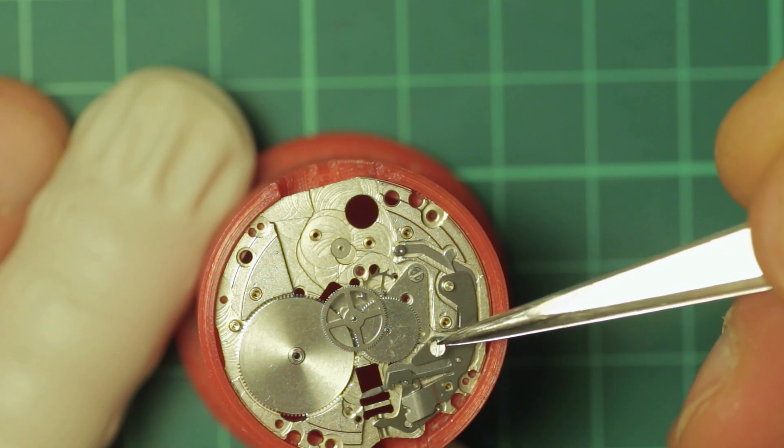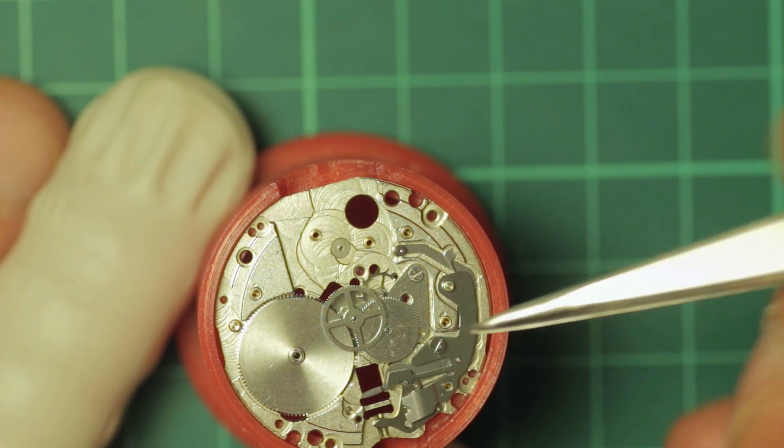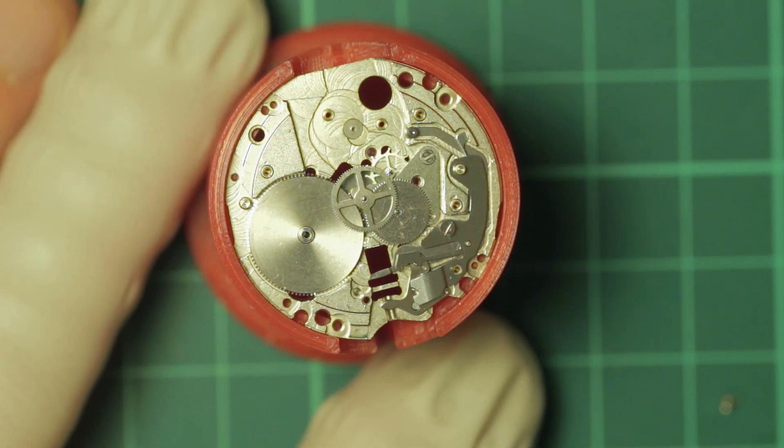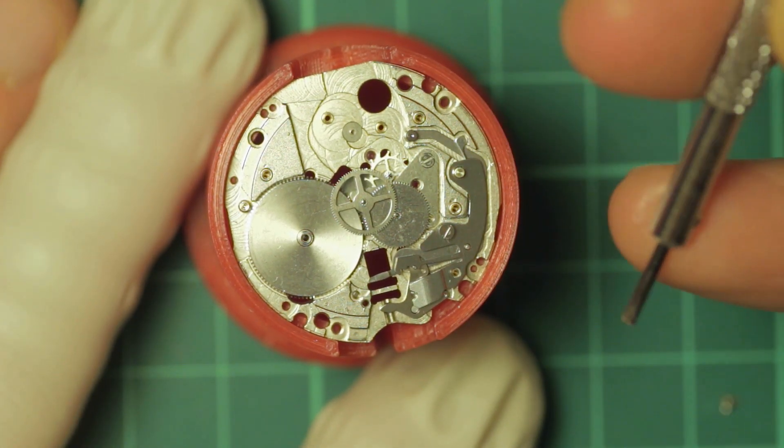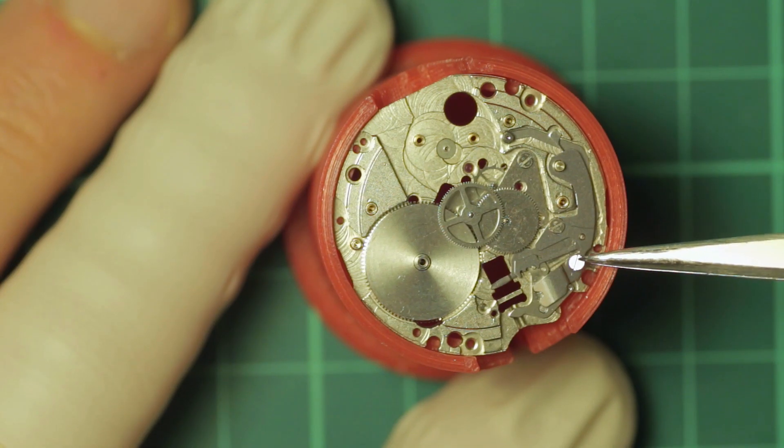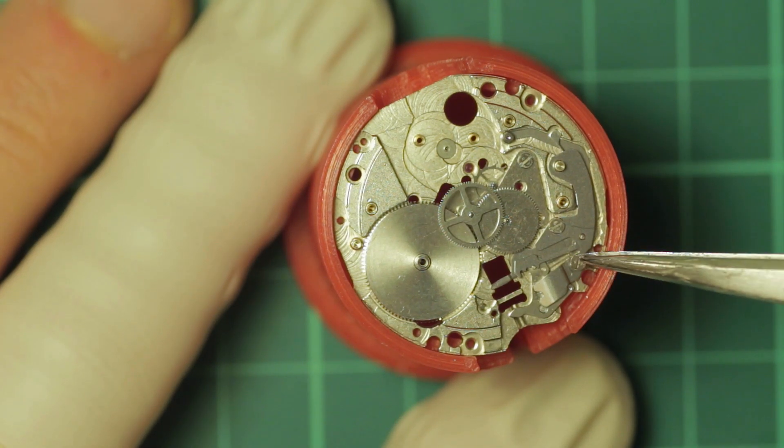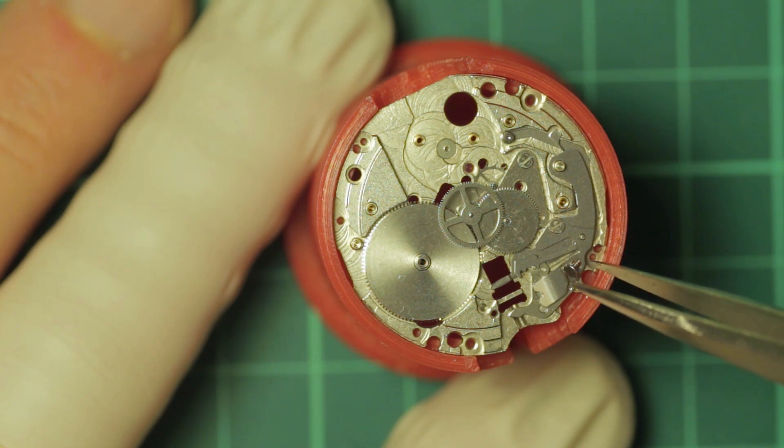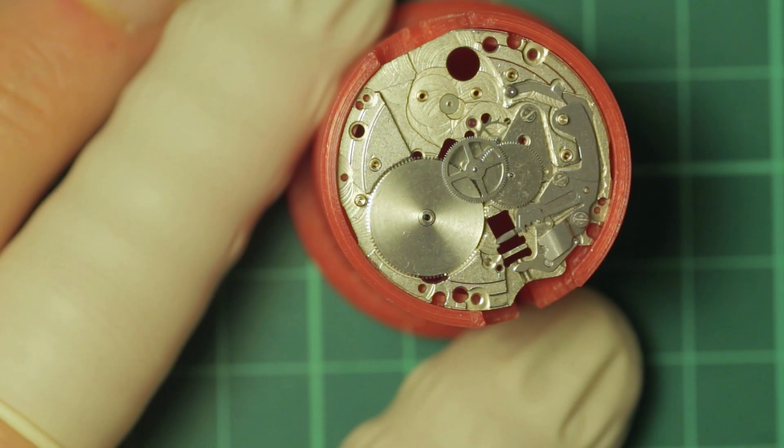But you can see the refit procedure there was the balance stop or the hack, depending on what you would like to call that. I don't know the official Seiko name for it, and then the setting lever, the yoke, and then the setting lever spring.